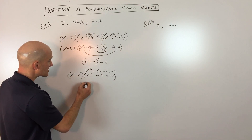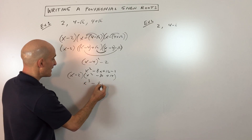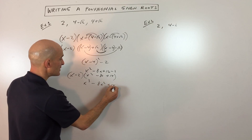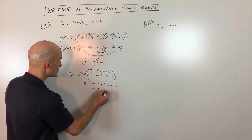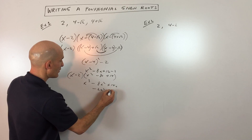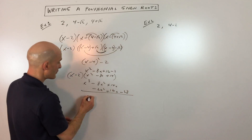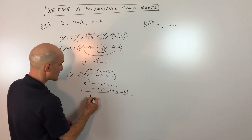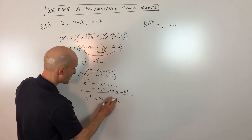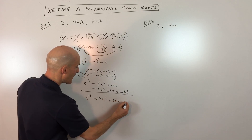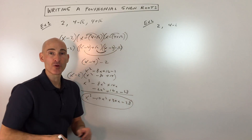So x times each of these is going to give you x cubed minus 8x squared plus 14x. Then distributing the negative 2, we get negative 2x squared plus 16x minus 28. Adding all those together, we get x cubed minus 10x squared plus 30x minus 28. So there's your polynomial right there.